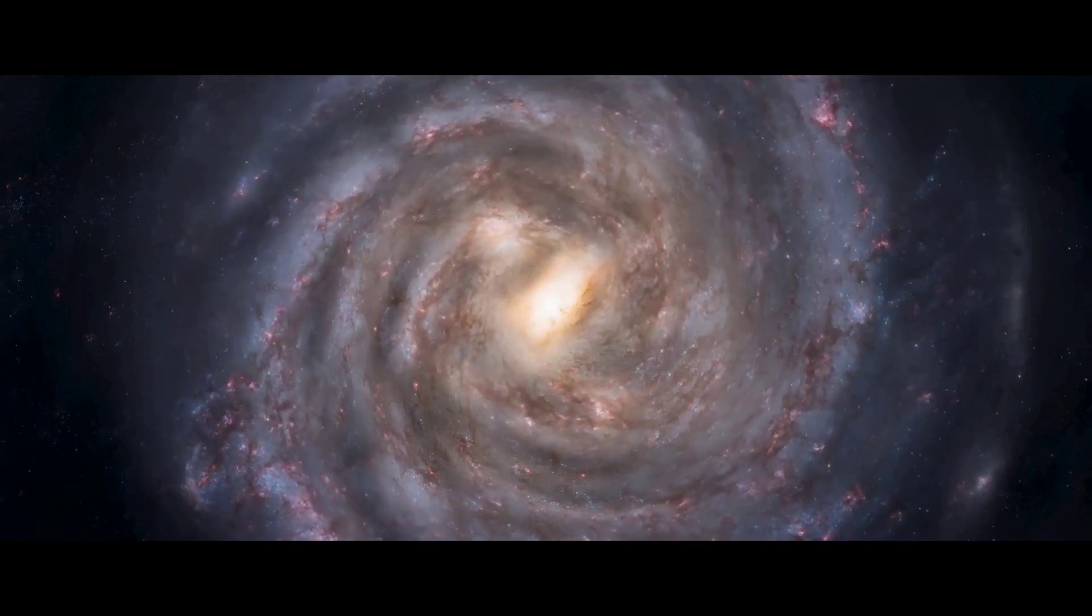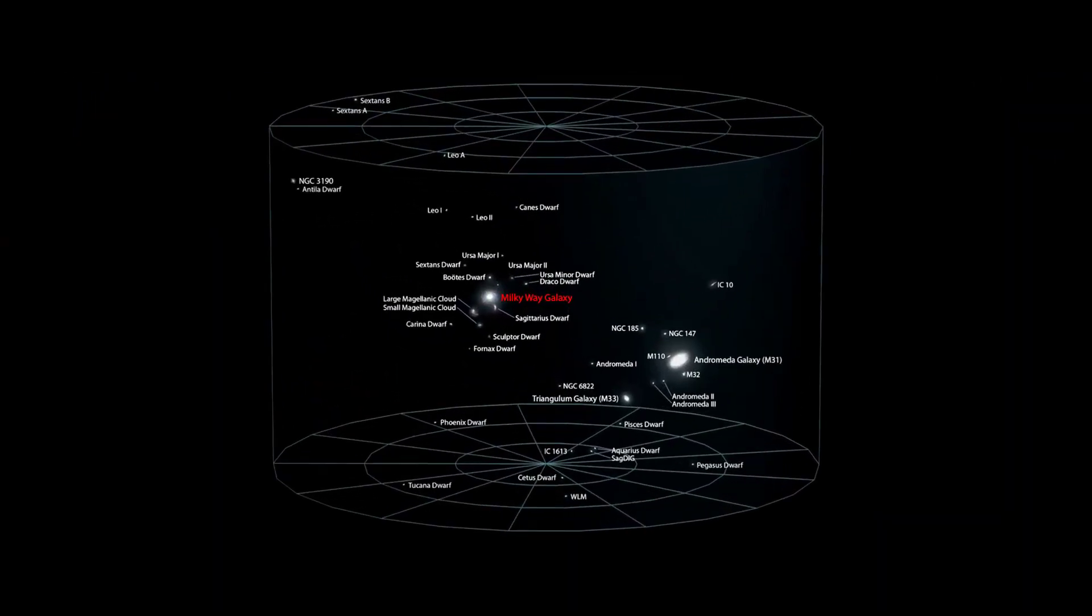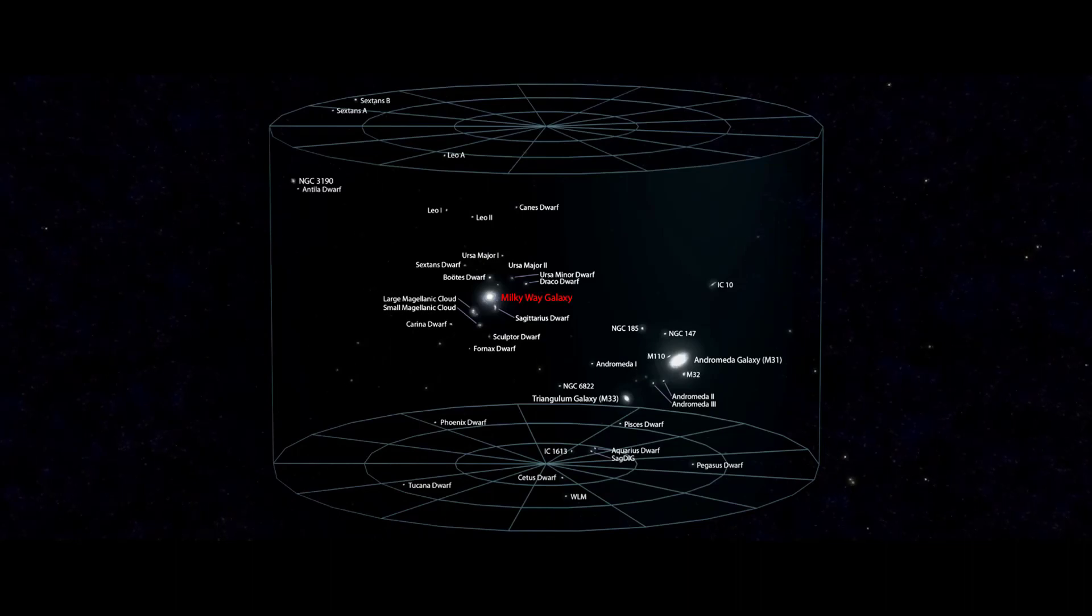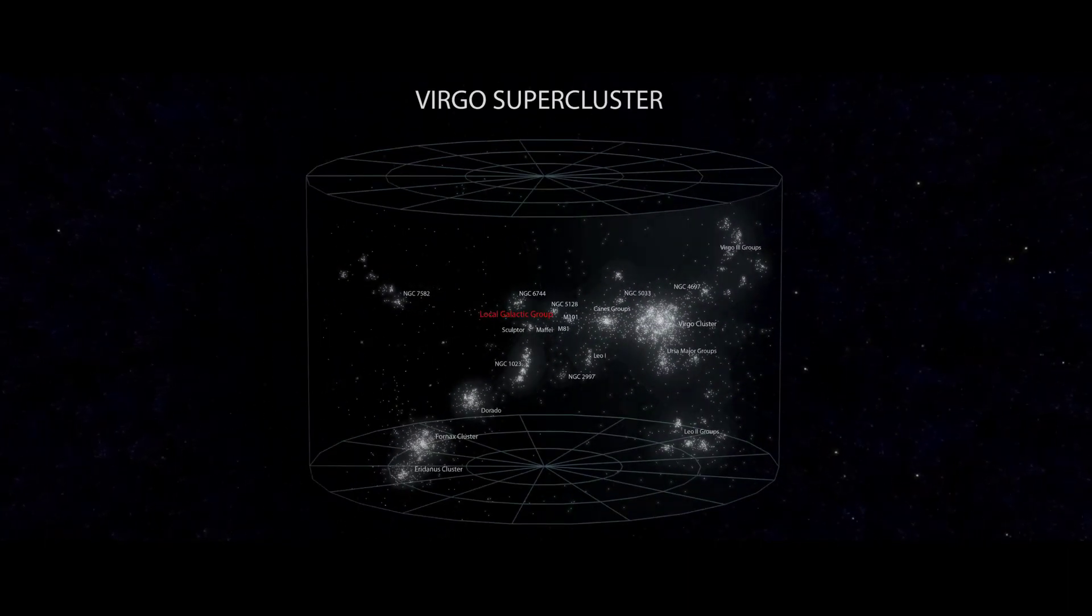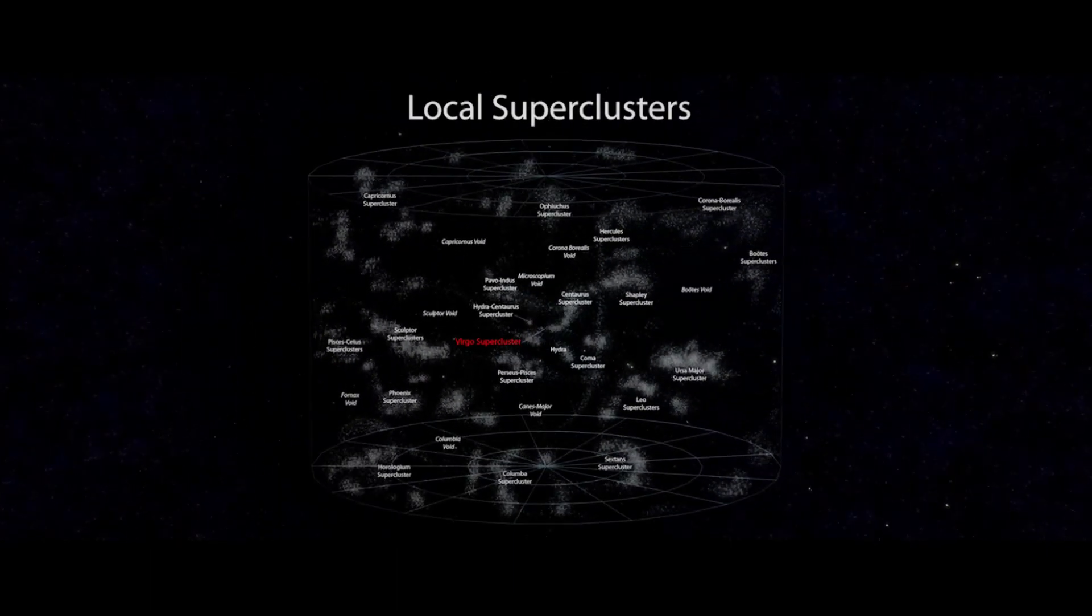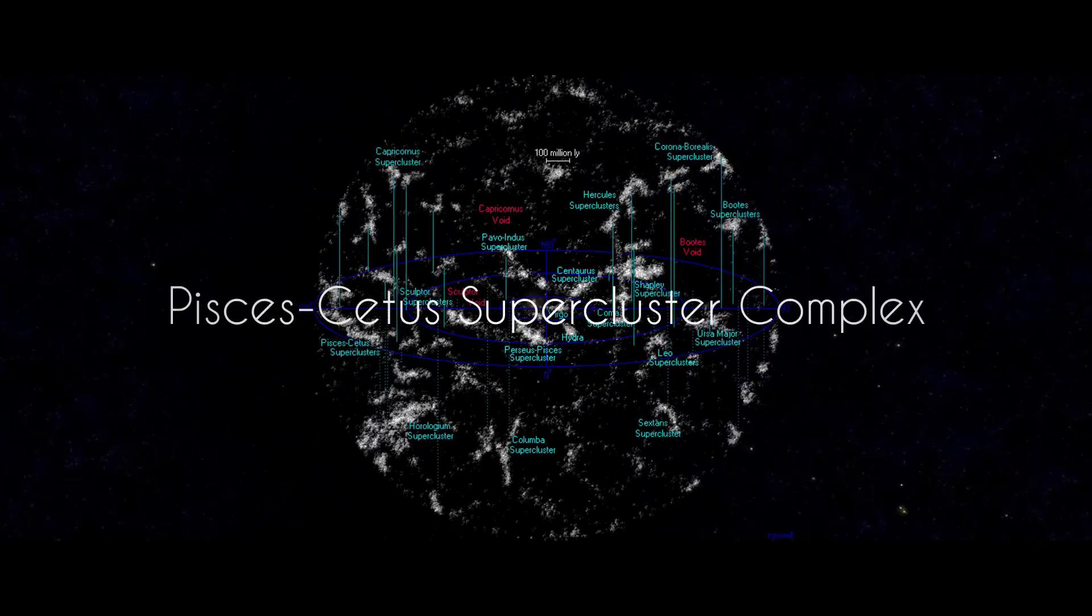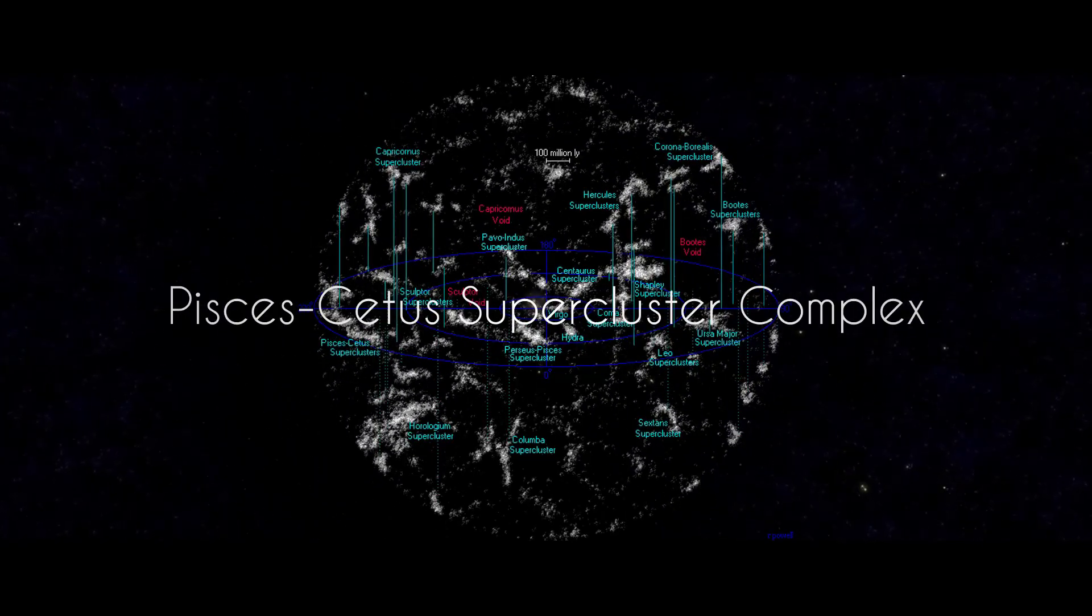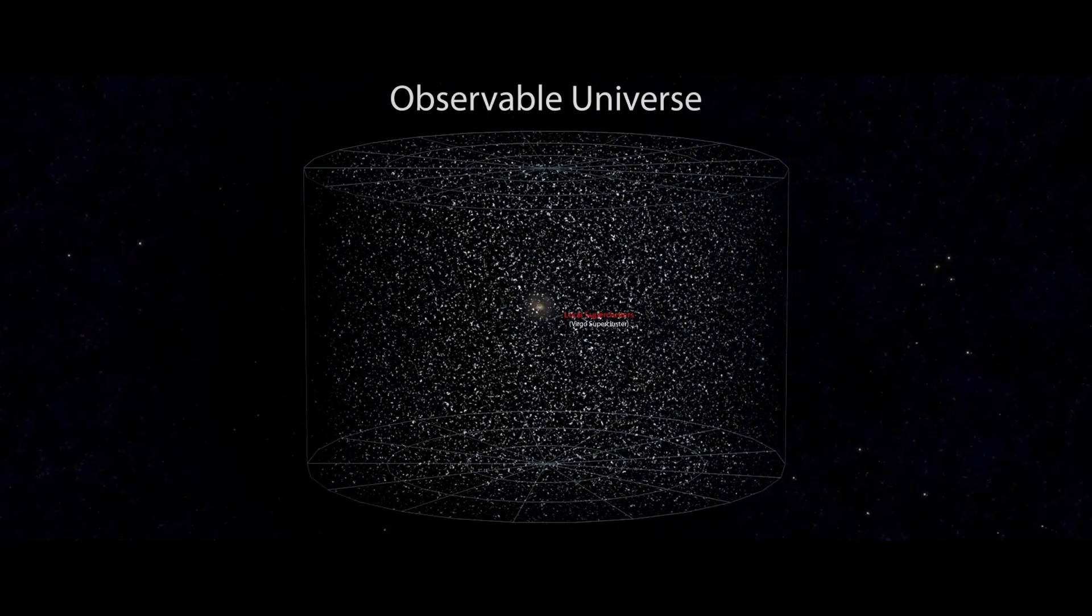But our galaxy is only one part of many galaxies that make up the Local Group, a series of galaxies that are closest to us. The Local Group itself is moving through space, and the Local Group is only part of the Virgo supercluster. And that cluster is part of the Local Superclusters, which it in itself is only part of the vastly larger Pisces-Satis Supercluster Complex, which is only one part of the Incomprehensible Observable Universe.